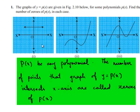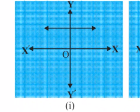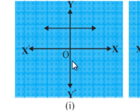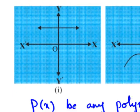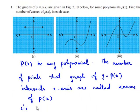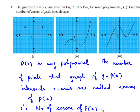So if we observe in the first case, the graph y is equal to p of x does not intersect the x-axis. That means in the first graph we can say that the number of zeros is equal to zero, since the graph does not intersect the x-axis at any point.